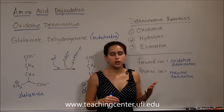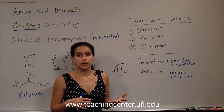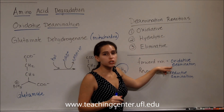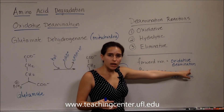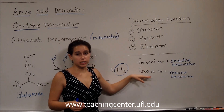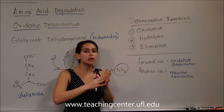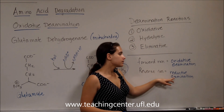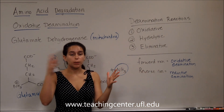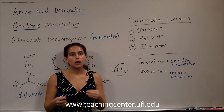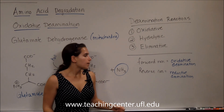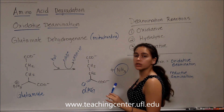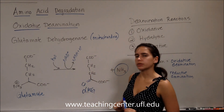We'll talk more about this in ammonia assimilation. Here, we're taking off ammonia with glutamate dehydrogenase — the forward reaction is oxidative deamination, oxidizing the molecule and removing the amino group. The reverse reaction, seen in assimilation, puts amino groups onto a molecule — that's reductive amination, where we reduce the molecule and add the amino group. It's important to distinguish between the two.